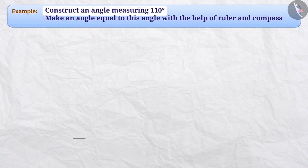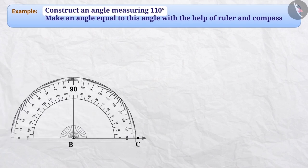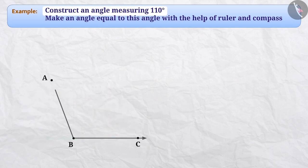First, we will draw a ray of any measurement and name it BC. Here, we will use the protractor. We will place the protractor on the ray BC so that the centre of the protractor is on point B and the zero edge is along the ray BC. As we have to measure 110 degrees, we will start from zero which is close to point C. We will mark a point in front of 110 degrees and name it A. Then, we will join point A and point B. This gives us angle ABC with a measurement of 110 degrees.